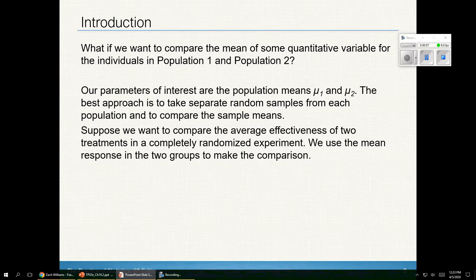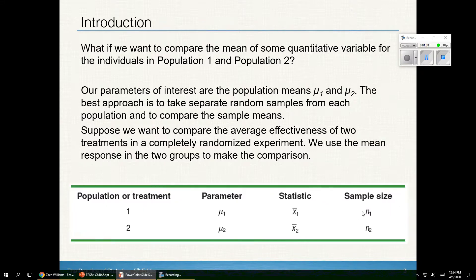Suppose we want to compare the average effectiveness, for example, of two treatments in a completely randomized experiment. We use the mean response in the two groups to make the comparison. So Group 1 has μ₁, x-bar 1, and n₁, and then Population 2 has the corresponding subscripts of 2.